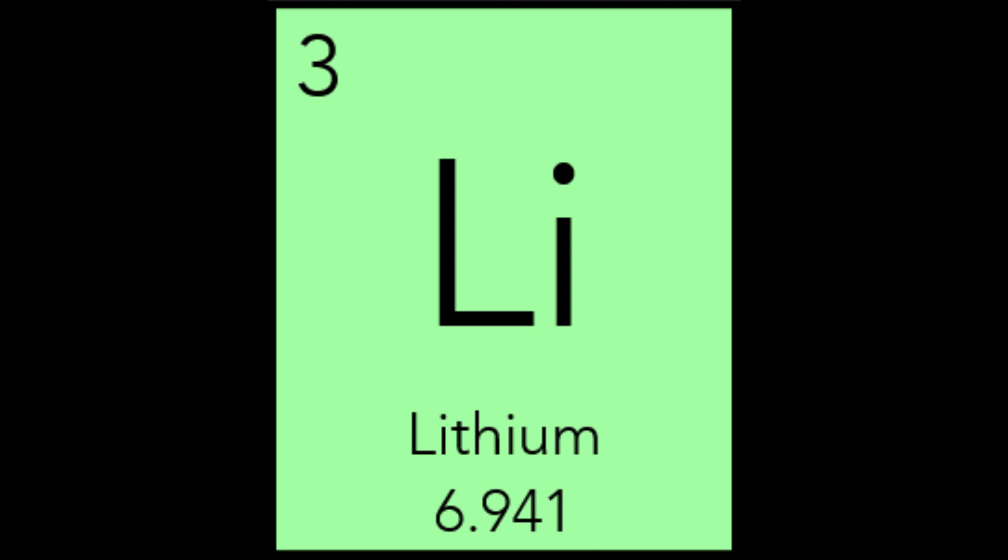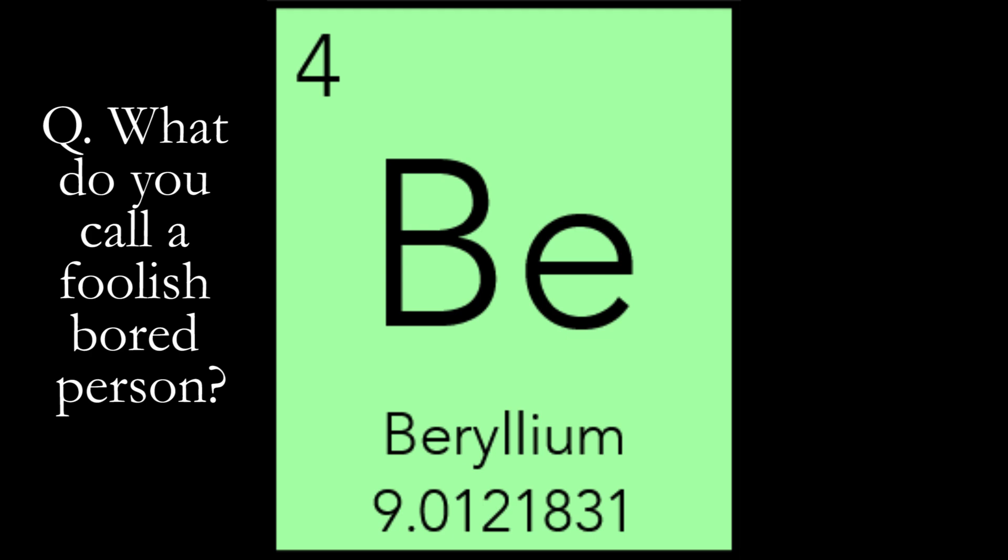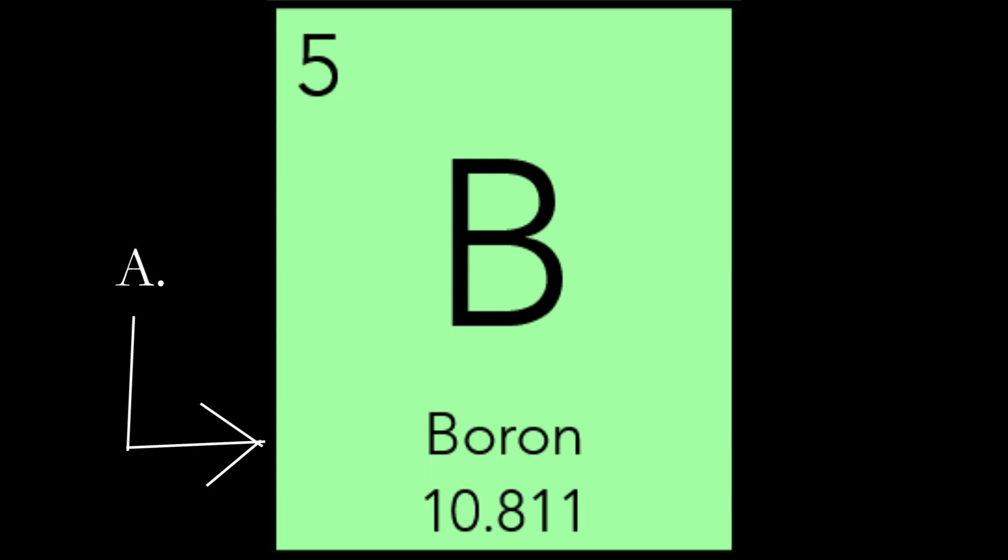Lithium is extremely reactive and has to be stored in mineral oil. Beryllium, Be, is named after the pale green mineral it is found in, called beryl, which has two varieties: aquamarine and emerald. Beryllium is extremely stiff and lightweight, so it is used in spacecraft, satellites, and even high-end bicycle frames. Inhaling beryllium dust can cause a chronic life-threatening disease called berylliosis. Boron, with the symbol B, was isolated from borax, so it was named after it. Borax is used in cosmetics, detergents, and even as an insecticide. Boron is used mostly as an additive in fiberglass and in borosilicate glass.